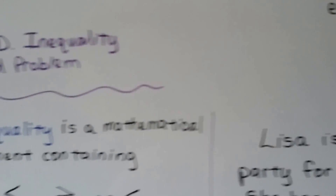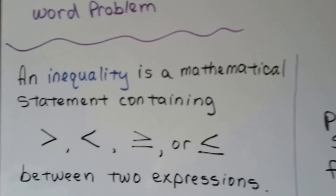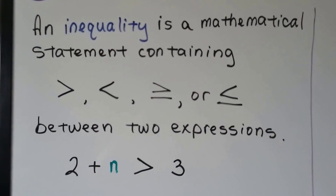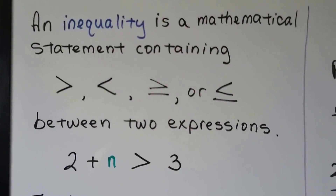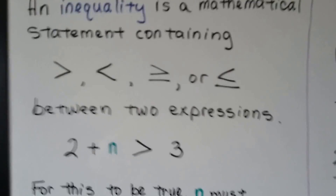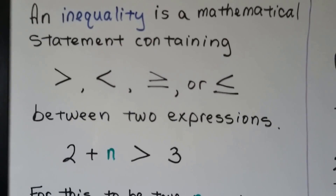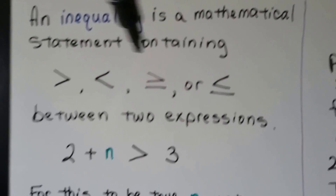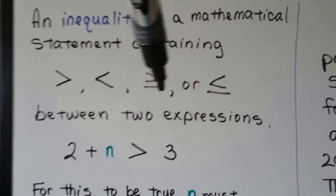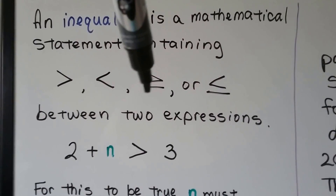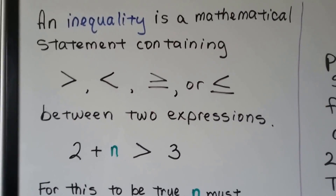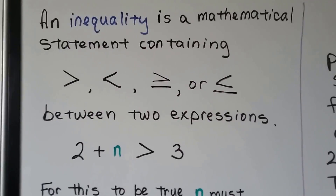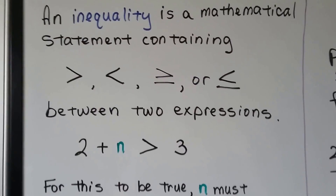An inequality is a mathematical statement that contains greater than, less than, greater than or equal to, or less than or equal to. This bar underneath the sign means 'or equal to,' and that's between two expressions.